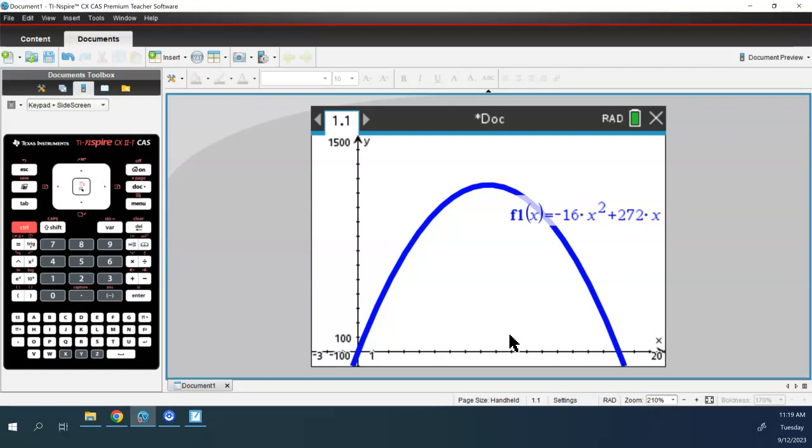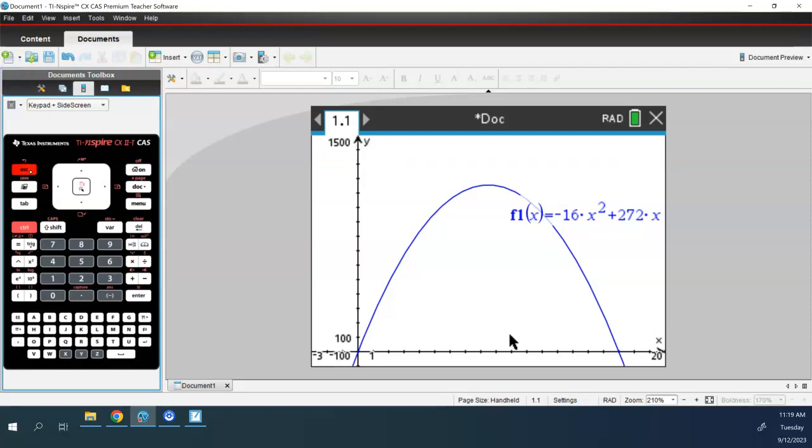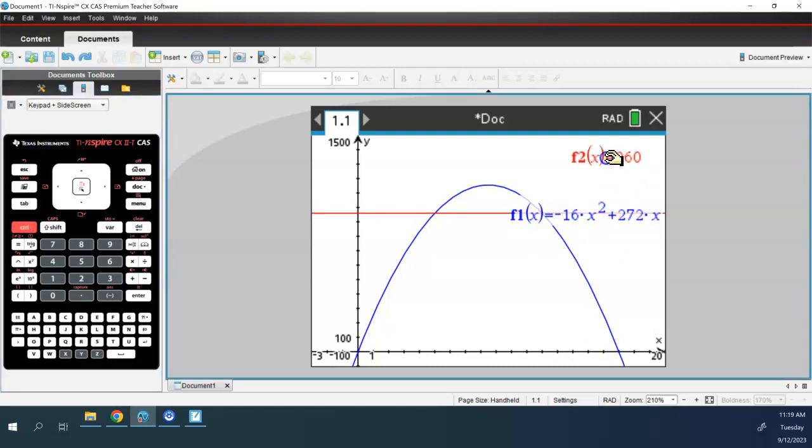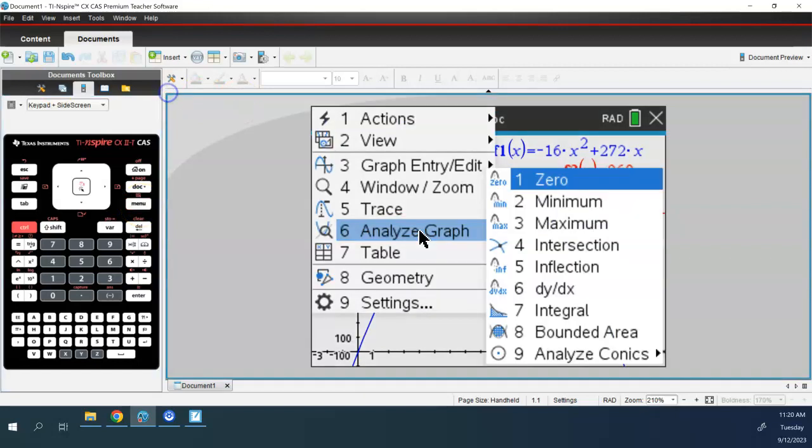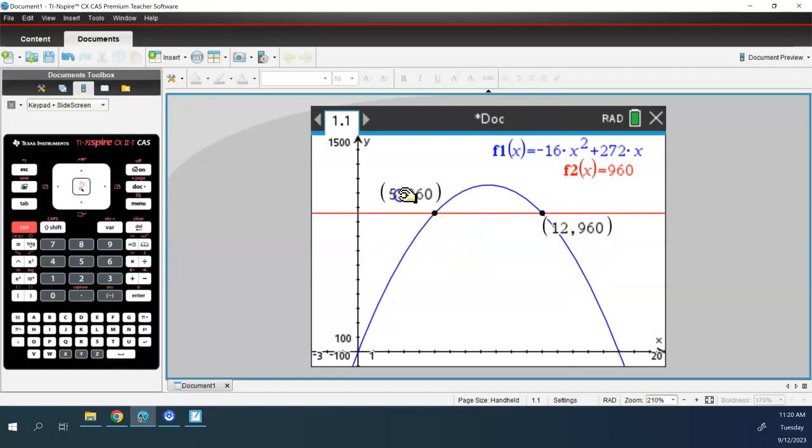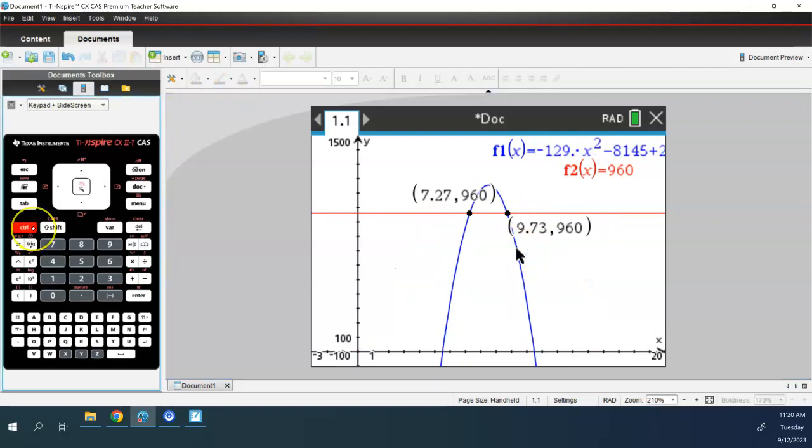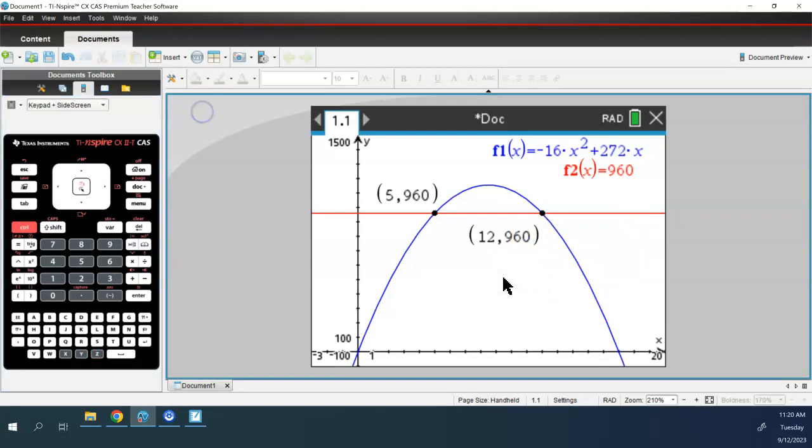Now, the reason we tell you this, is because now, from this, we could put in a second function of 960, and then what would we look for here now? We would look for the intersection of those two. Menu, analyze, intersection. Menu, analyze, intersection. I get to go a little faster because I've got a touch screen. What else could we figure out from the graph?